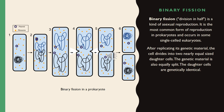Binary fission is the most common form of reproduction in prokaryotes and occurs in some single-celled eukaryotes. After replicating its genetic material, the cell divides into two nearly equal-sized daughter cells. The genetic material is also equally split, so the daughter cells are genetically identical.